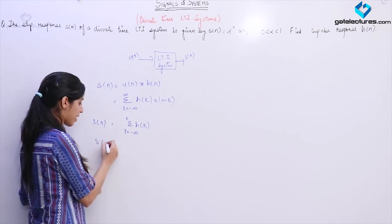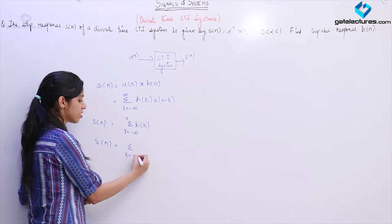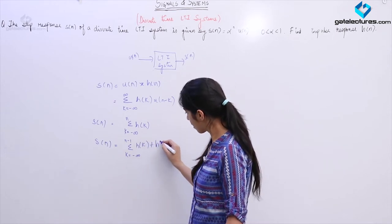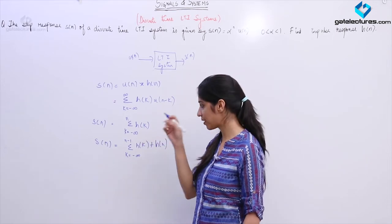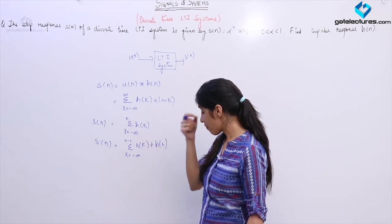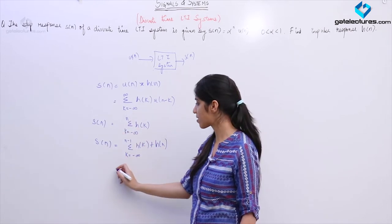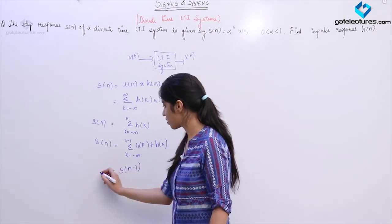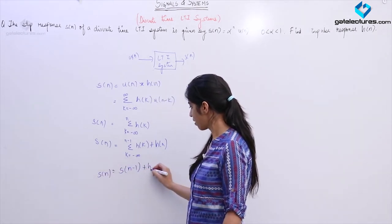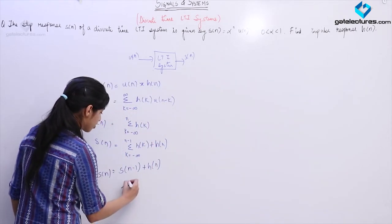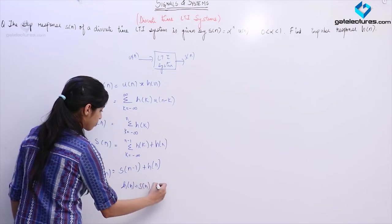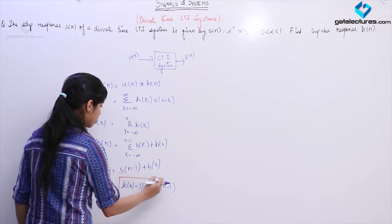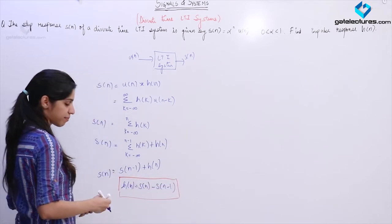Now, if you just observe, I can change the limits of summation from k equals minus infinity to n minus 1 and write the sample at k equals n separately. When the limits were from minus infinity to n, that was S(n). Since the limits are now from minus infinity to n minus 1, I can say that this is S(n minus 1). So if I need to find the impulse response H(n) in terms of step response, H(n) is going to be S(n) minus S(n minus 1).